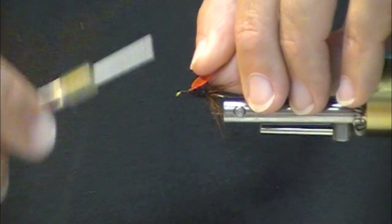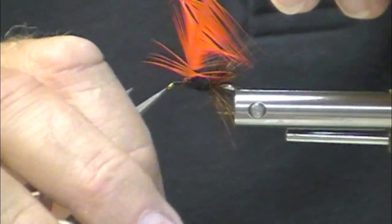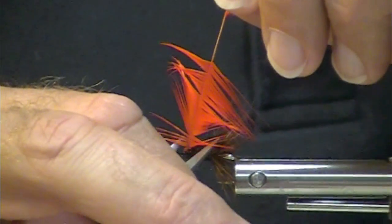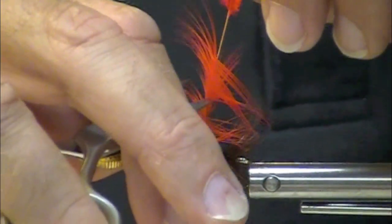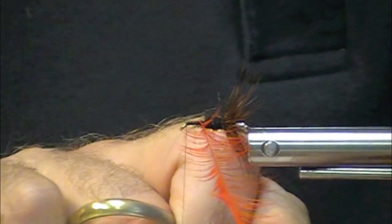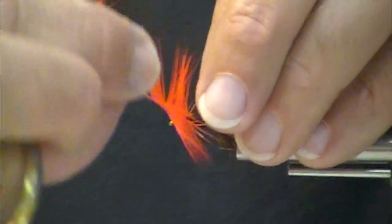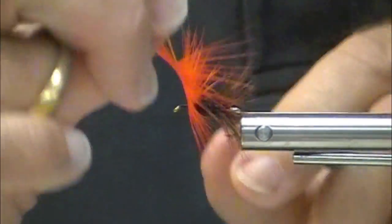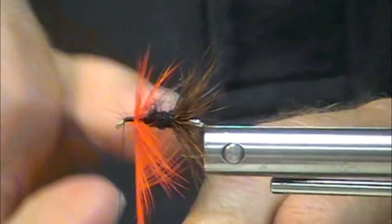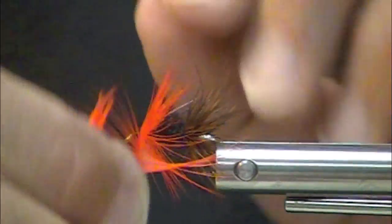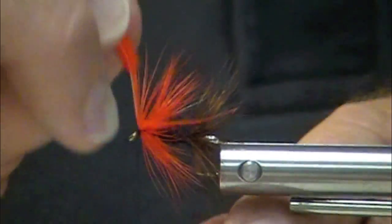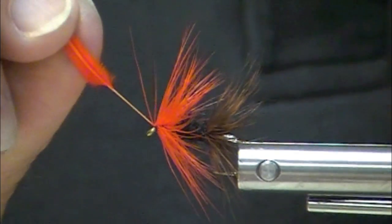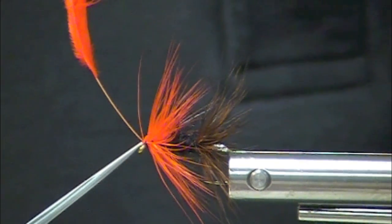I'm going to tie this hackle in by the tip. The fact of the matter is that if one were to mimic the colors one sees in rooster tails, for example pinks, oranges, yellows, green and yellow, they're good attractor type patterns. This hackle's coming in by the tip first. TMC 3761 size 8.